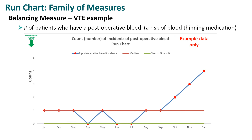This next run chart looks at the balancing measure for the VTE project — the count or number of incidents of postoperative bleed, because post-op bleed can be a risk of the blood thinning medication. The desired direction of this chart is down. Unfortunately, at the end of the year, there is a trend upwards in the data, which is an undesirable outcome. The team will need to work out how they can balance the reduction of VTE incidents while also keeping their postoperative bleed rate down.